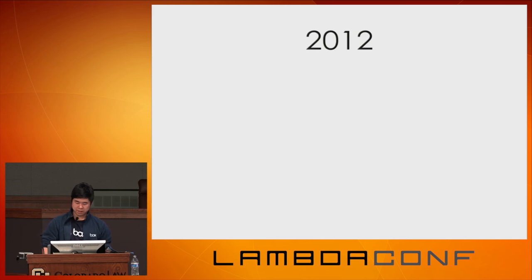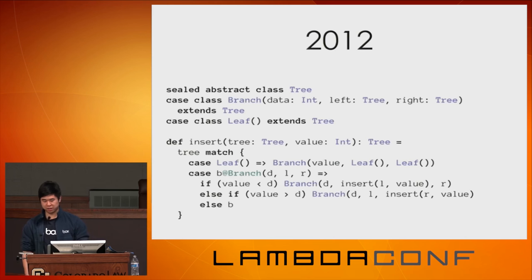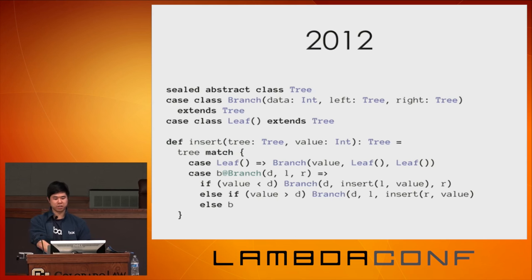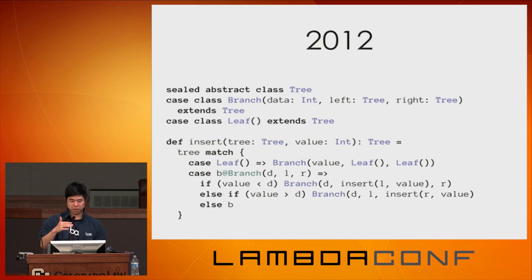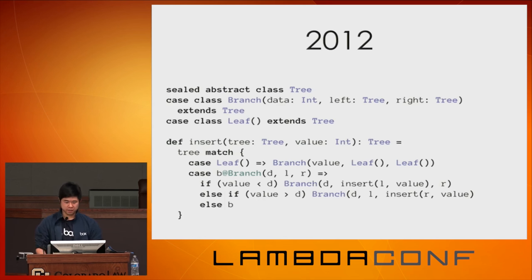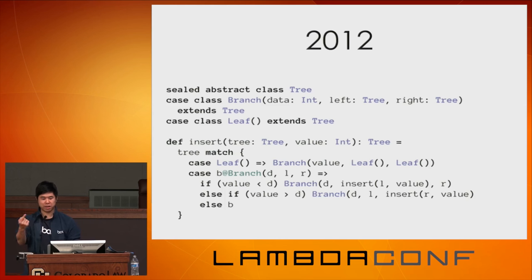One example that fascinated me was the same binary search tree insert I'd seen in C++. That giant block of code I showed earlier was just the code to insert into a tree — I didn't even show the tree definition. Whereas in Scala, I had fewer lines and, to me, much more readable code that's easier to reason about. When I ask what's a tree, a tree is either a branch that contains some data and left and right subtrees, or a leaf that contains nothing.